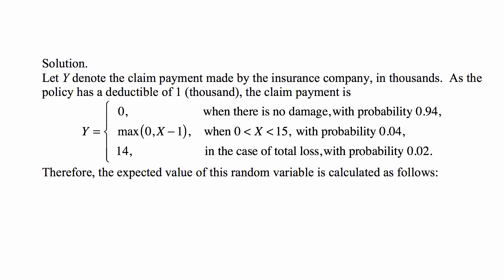And 14 in the case of total loss with probability 0.02. Not 15. The loss is 15,000, but the payment is 14 because there's a deductible of 1,000. And based on this, the expected value of this random variable is calculated as follows.